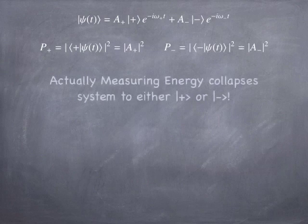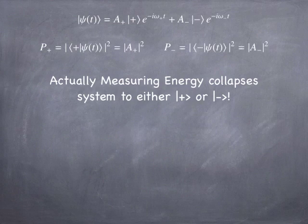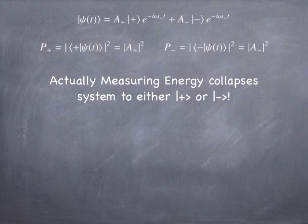If you actually do the measurement, the system collapses to either plus or minus if you're measuring energy. So if you measured the energy and got plus, the system would now be in a new state which is just plus times e to the minus i omega-plus t with no minus component. And if you measured minus, the system would collapse instantly to minus times e to the minus i omega-minus t with no plus component.